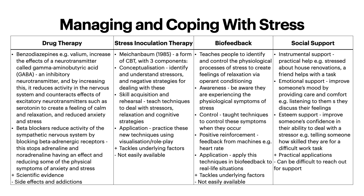Then you have social support. So instrumental support: practical help, such as a friend helping with house renovations if you're stressed about them. Then emotional support: improving someone's mood by providing care and comfort, such as listening to them as they discuss their feelings. And esteem support: improving someone's confidence in their ability to deal with a stressor, e.g. telling someone how skilled they are for a difficult work task. Obviously this has practical applications showing how friends and family can support us, but when you're struggling with stress or any kind of emotional issues it can be difficult to reach out for support, so this isn't always the most accessible option either.